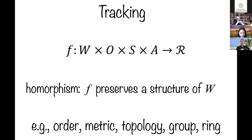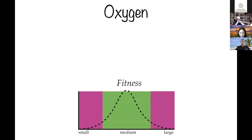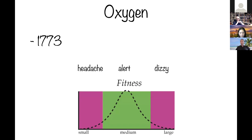The probability that a fitness payoff will have information about the structure of objective reality is zero. If the fitness payoff functions don't have information about the structure of the world, then natural selection cannot tune you to that structure. If the information is not in the fitness payoffs, natural selection cannot do it. An example is oxygen — we didn't even discover oxygen until 1773, but our senses gave us fitness payoff information about it: too little gave a headache, too much made you dizzy, and just the right amount left you feeling alert.